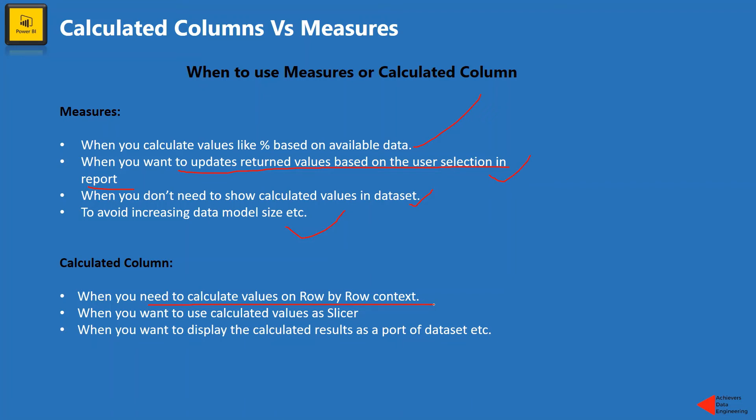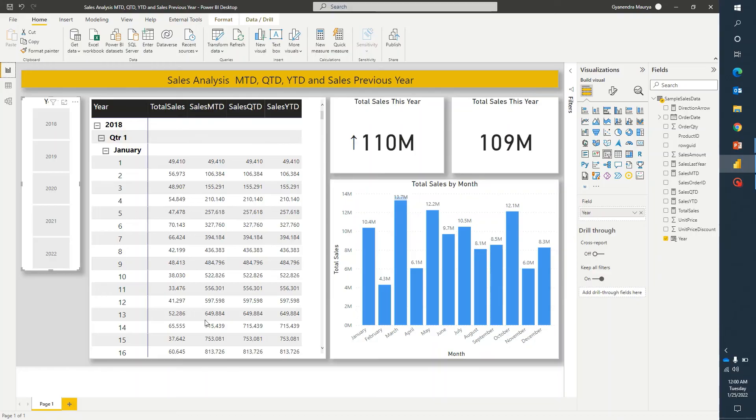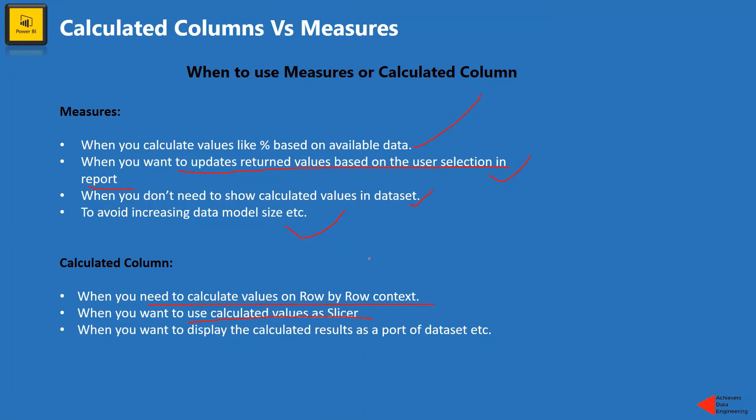total sales of that order ID, then you will have to go for a calculated column because you will have to consider how many products were sold and what was the unit price. So in that situation, you will have to create a calculated column. Now, another one is if you want to use those calculated values as a slicer, as we discussed in this one. So in that situation, you should go for calculated columns. Also, if you want to display the calculated result as a part of your data set, then also you should consider creating calculated columns.